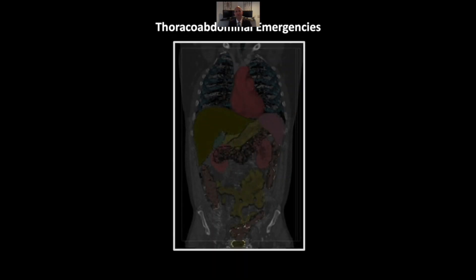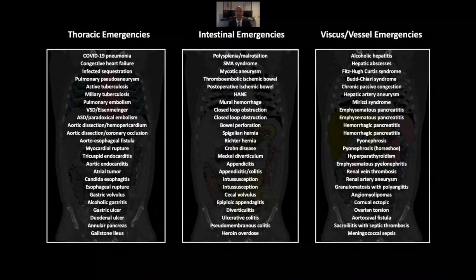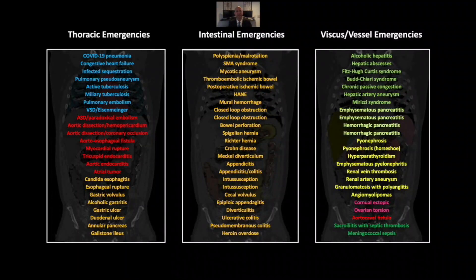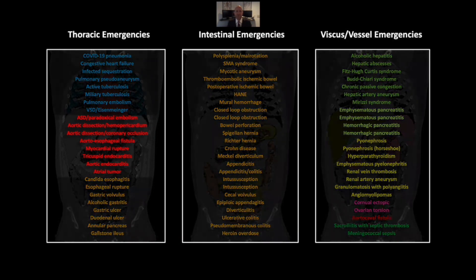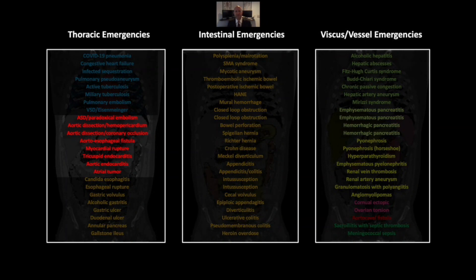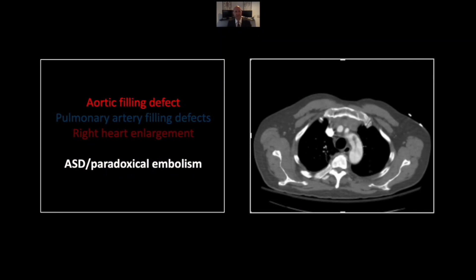Here is our agenda for this series, which I have broken into nine sessions of eight cases each, all grouped by organ system. Session two of our series is Mediastinal Emergencies, and we'll start this session with a case of an ASD with paradoxical embolism.